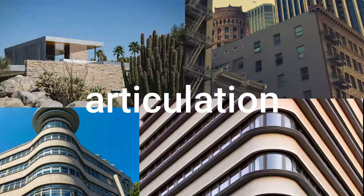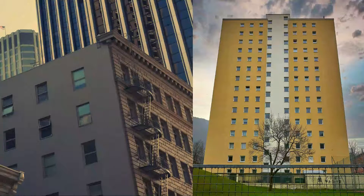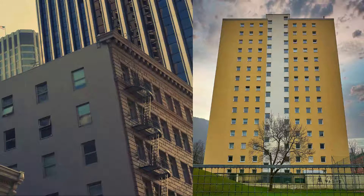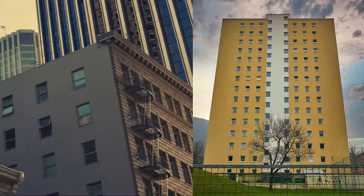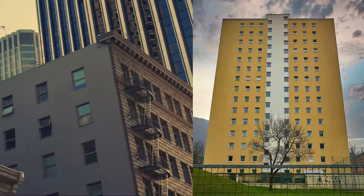We'll see some examples of articulation and how it affects the design. One way is for the surfaces to have different or contrasting qualities such as colour, texture, material, or pattern, and this affects the perception of the corner's existence. This depends on the perspective of the viewer and the light illuminating the form, so your mind understands there's a corner where the change is happening.